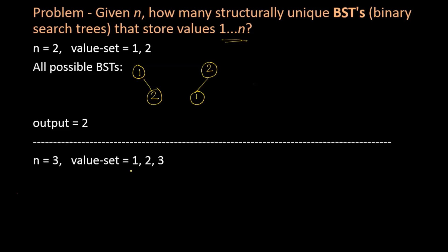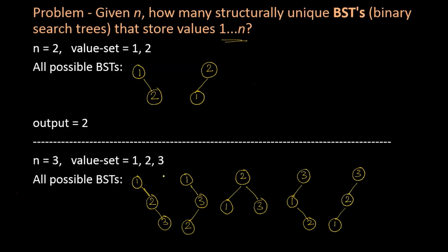Now if n is equal to 3, the values that will be used are 1, 2, 3, and all possible BSTs that could be formed are these 5 trees. So our subroutine should return output as 5. Note that all of these 5 trees are binary search trees.